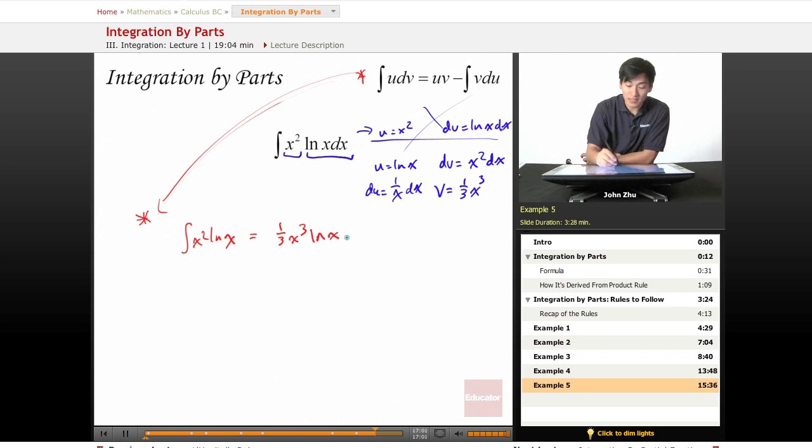minus the integral of v, one third x cubed times du, which is one over x dx. So no problem here, we just cancel out the x's appropriately and use the power rule.